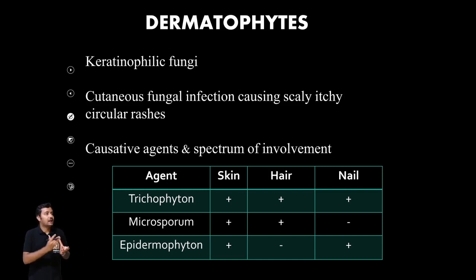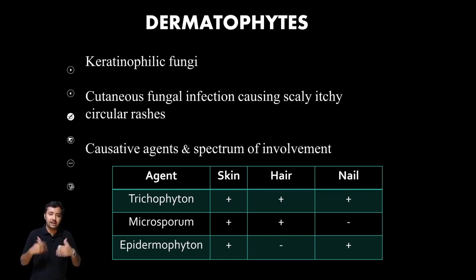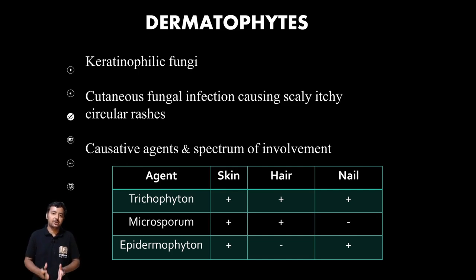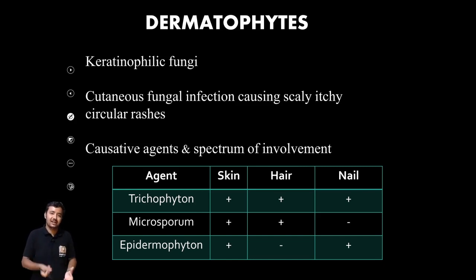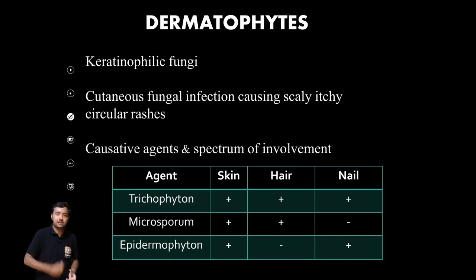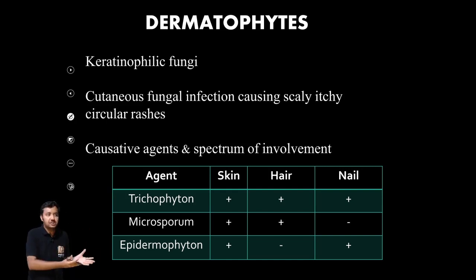They are keratinophilic fungi — fungi that are abundant in keratin-rich locations. They affect the sites where keratin is abundant. They cause cutaneous fungal infections, presenting with scaly, itchy rashes. Scaling and itching are common symptoms, along with circular rashes.